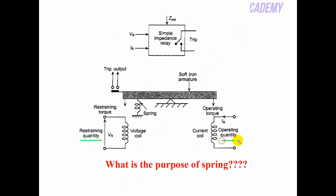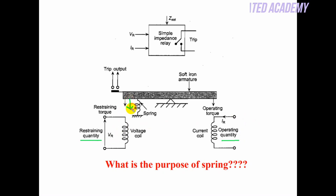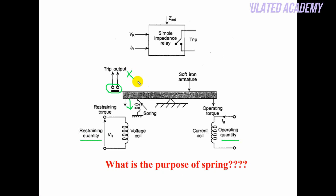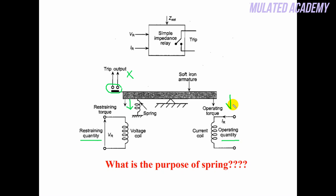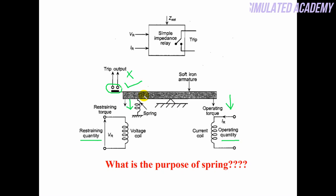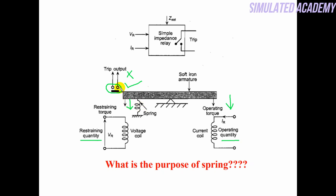If the restraining torque is greater, it will attract the beam downward, so the contact will not close and no trip signal will be generated. If the operating torque is greater, it will attract the beam downwards, the contact will close and a trip signal will be generated. The spring is used to ensure that under normal conditions the contact does not close and no trip signal is generated.